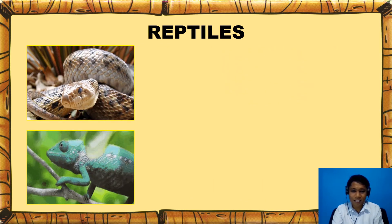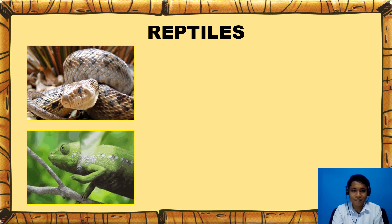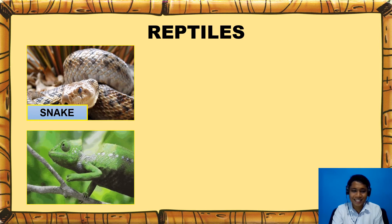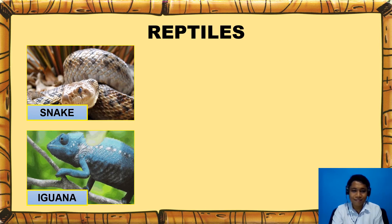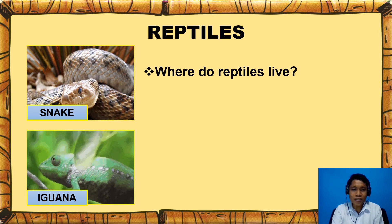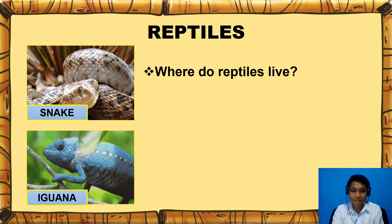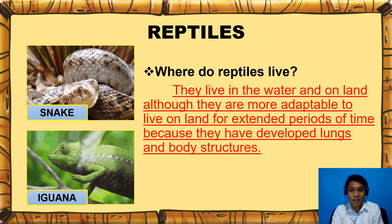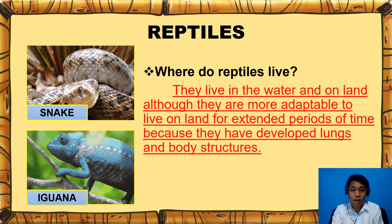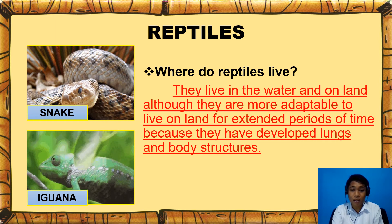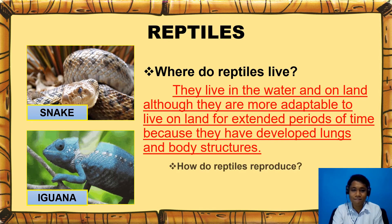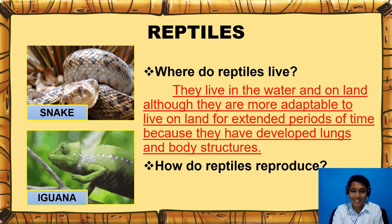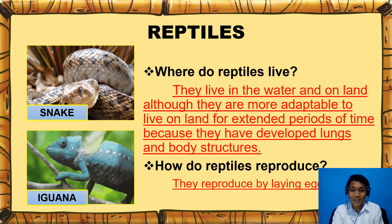How about these animals, class? Can you name them? That's a snake and that is an iguana. Now, where do reptiles live? They live in the water and on land, although they are more adaptable to live on land for extended periods of time because they have developed lungs and body structures. And how do reptiles reproduce? They reproduce by laying eggs.